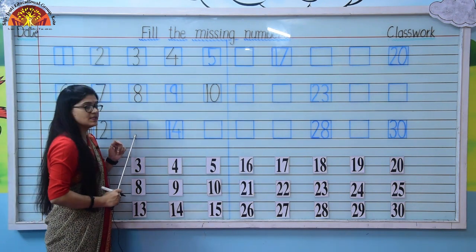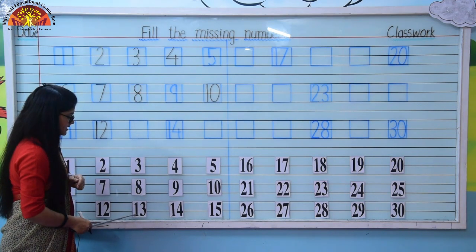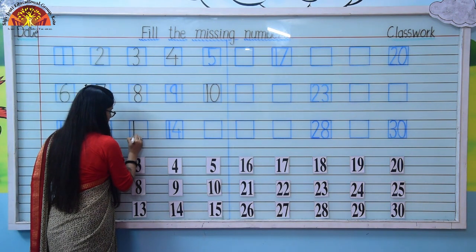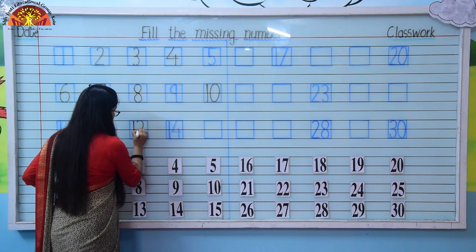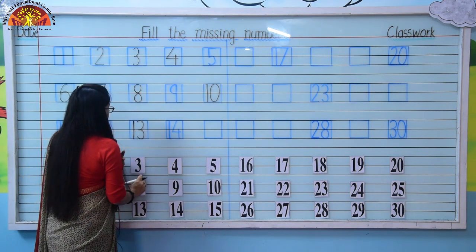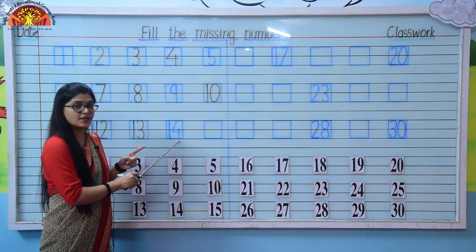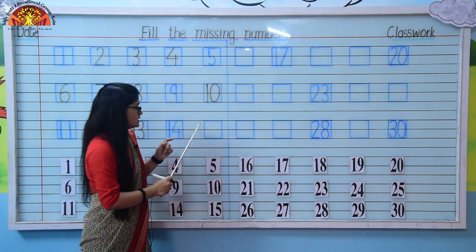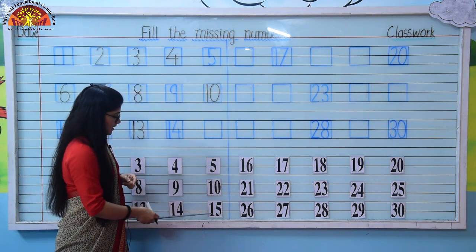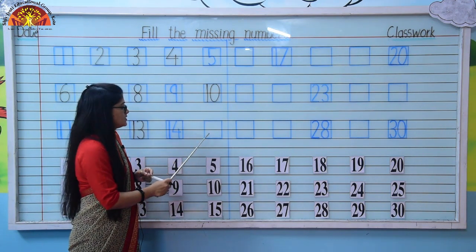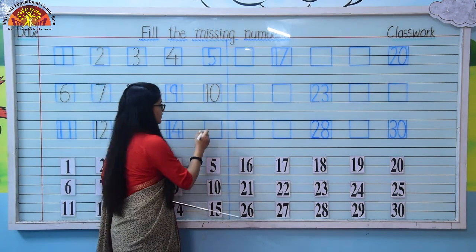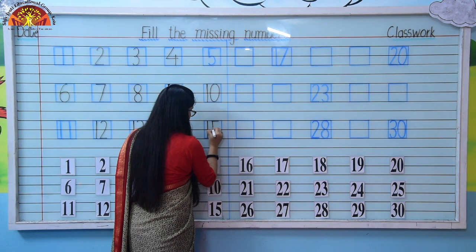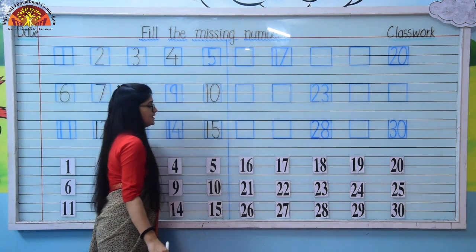Again, one number is missing here. So which number comes after 12? It's 13. So here we will write number 13: 1, 3, 13. Our next number is 14 — it's already written. The next one is missing. So which number comes after 14? After 14 it's 15. So here we will write number 15: 1, 5, 15.